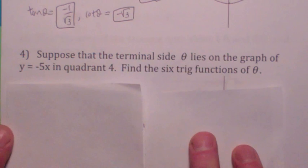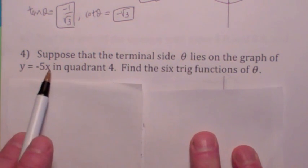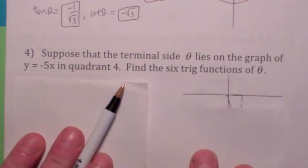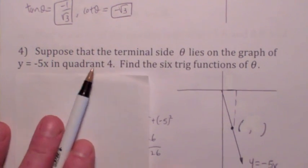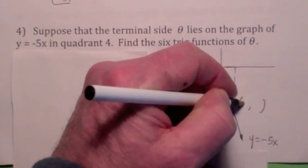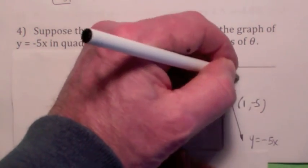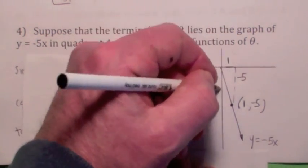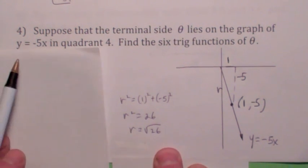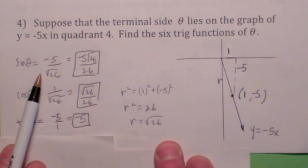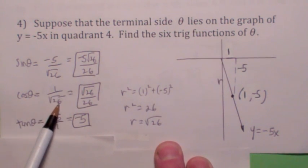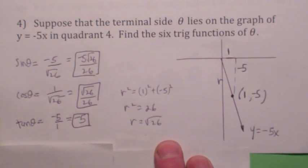Suppose theta has its terminal side on the graph of y = −5x in the fourth quadrant. They don't tell you if theta is positive or negative — it doesn't make any difference. All that matters is that you find a point on the terminal side. If the x-coordinate is 1, then the y-coordinate would be −5. So the point is (1, −5), and r equals the square root of 1 squared plus (−5) squared, which gives the square root of 26.